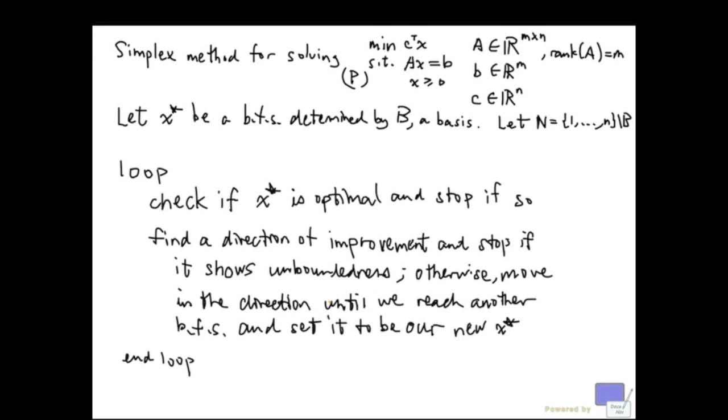So how do we deal with the case when we have degenerate basic feasible solutions? Well, there are a couple of options. One is use what is known as an anti-cycling rule. Cycling is when you go back to a basis that you have encountered before.